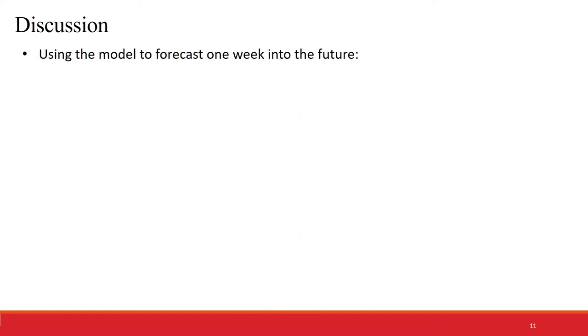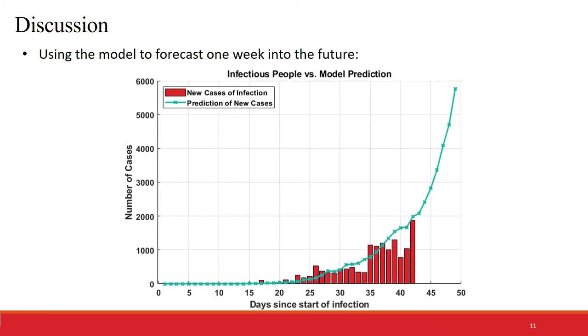Finally, we can use this model to forecast one week into the future. This shows us that if no measures are taken, within seven days, the number of new cases on a given day, on the seventh day, would surpass 5,000.